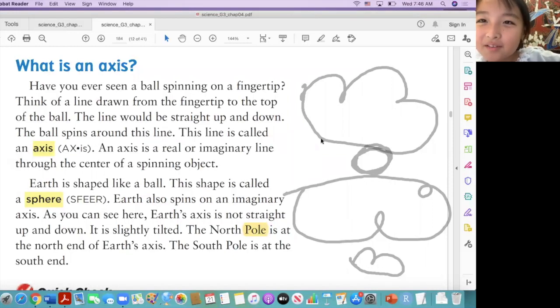Think of a line from the fingertip to the top of the bottom. The line will be straight up and down. The ball spins around with this line. This line is called an axis. Axis. Axis.